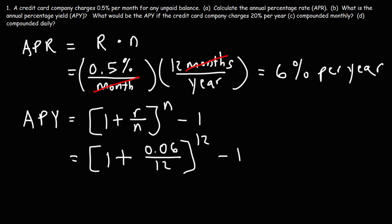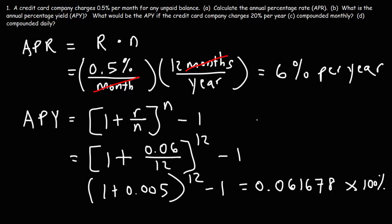We know that 0.06 divided by 12 is 0.005. So, this becomes 1 plus 0.005. So, 1.005 raised to the 12th power, minus 1, gives you this number, 0.061678. Now, that's the annual percentage yield as a decimal. So, what we need to do is multiply this by 100 to convert it into a percentage. So, the APY for Part B is going to be, if you round it, approximately 6.168%.